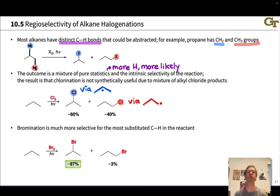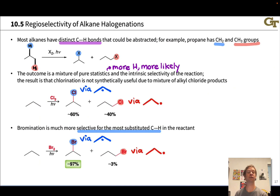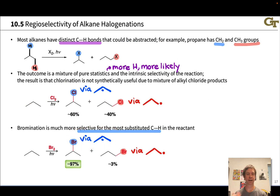However, bromination is much more selective. If we run the same reaction with Br2 instead of Cl2, we get 97% the secondary alkyl bromide product via the more stable secondary radical. So bromination is much more highly selective, and for higher alkanes than methane, we're always going to use Br2 and light to ensure we get the highest yield of product possible and avoid separation issues between isomeric alkyl bromides.